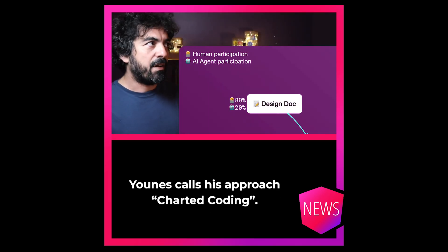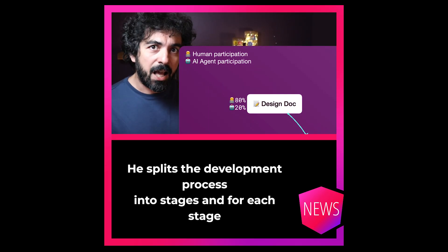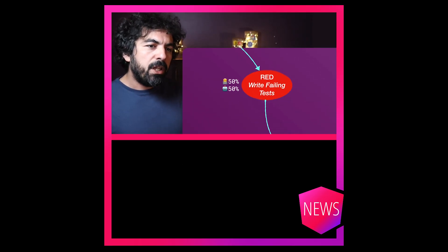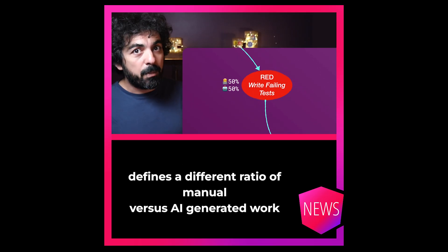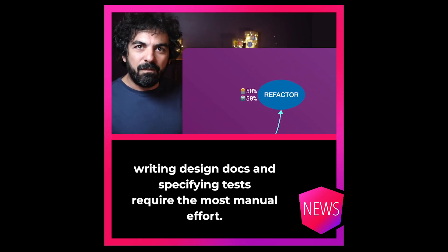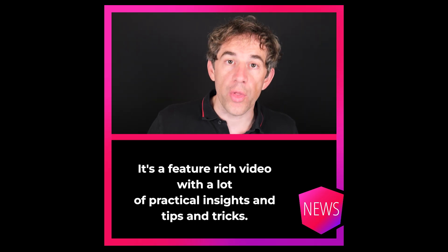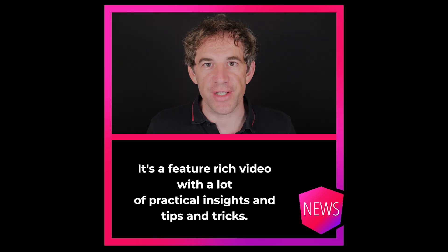Yunus calls his approach chartered coding. He splits the development process into stages and for each stage defines a different ratio of manual versus AI-generated work. The planning phases, writing design docs and specifying tests require the most manual effort. It's a feature-rich video with a lot of practical insights and tips and tricks.